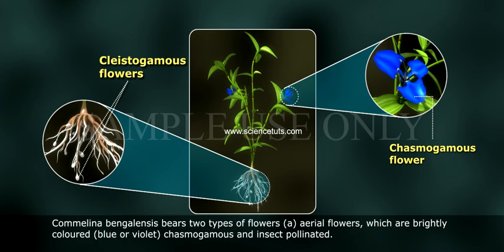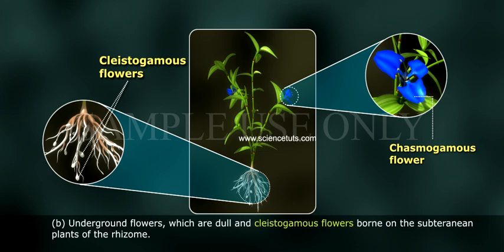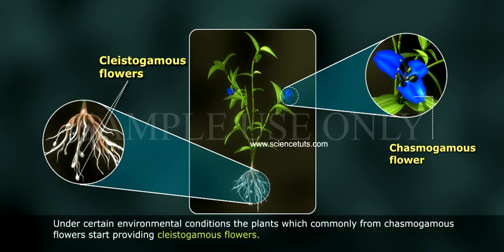Commelina bengalensis bears two types of flowers. A: aerial flowers, which are brightly colored — blue or violet — chasmogamous and insect-pollinated. B: underground flowers, which are dull and cleistogamous, borne on the subterranean parts of the rhizome. Under certain environmental conditions, plants which commonly form chasmogamous flowers start producing cleistogamous flowers.